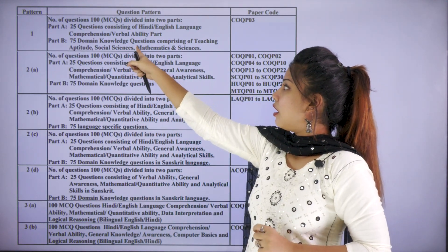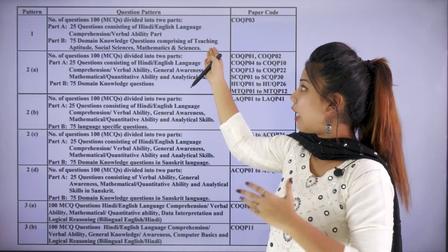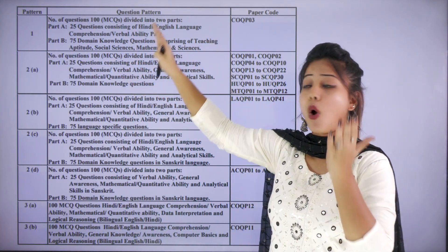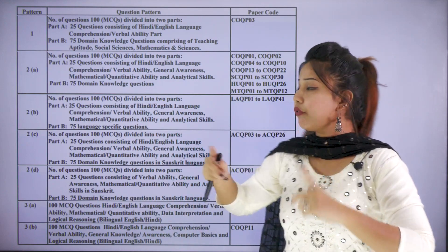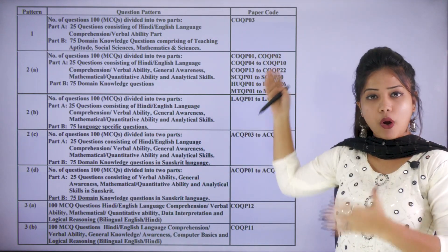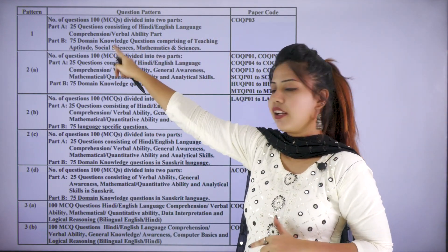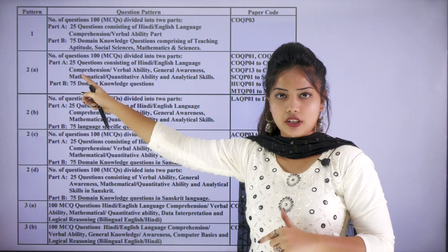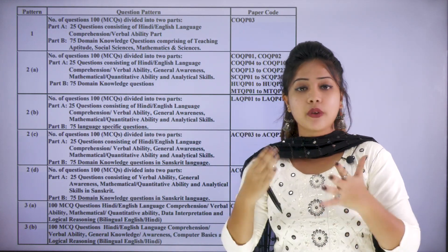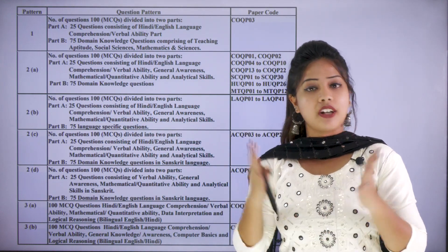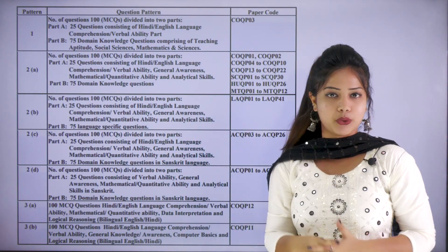The 25 MCQs in Part A are asked from language comprehension or verbal ability. If you come under COQP03, you usually have this kind of question pattern. After referring to your paper pattern correctly, you can have an idea of which category you come under.